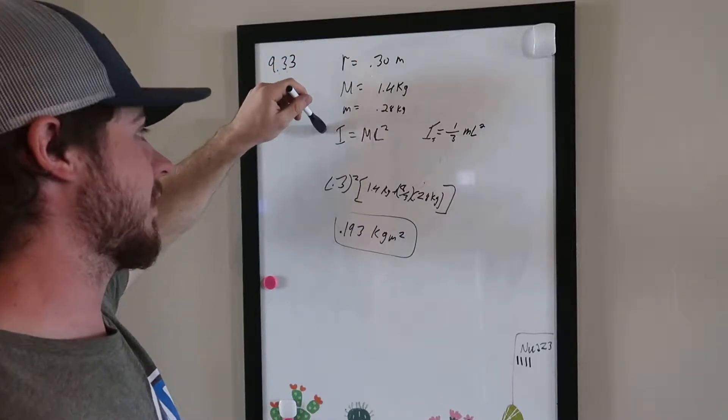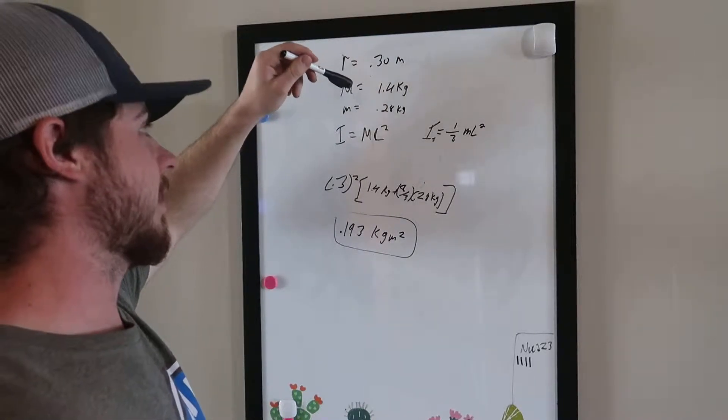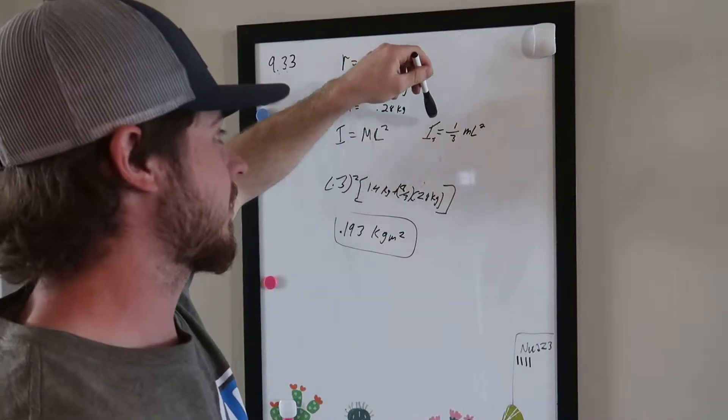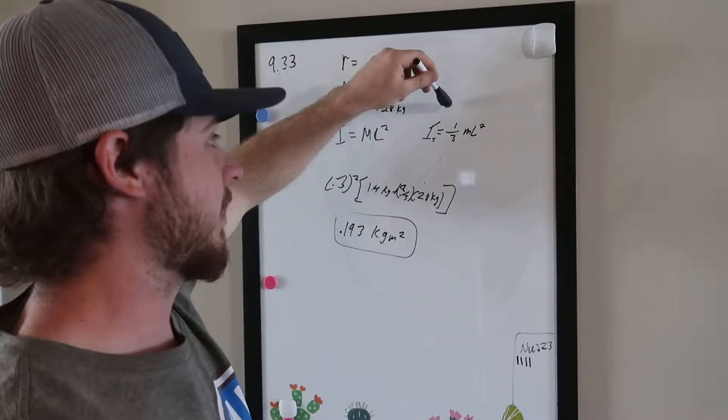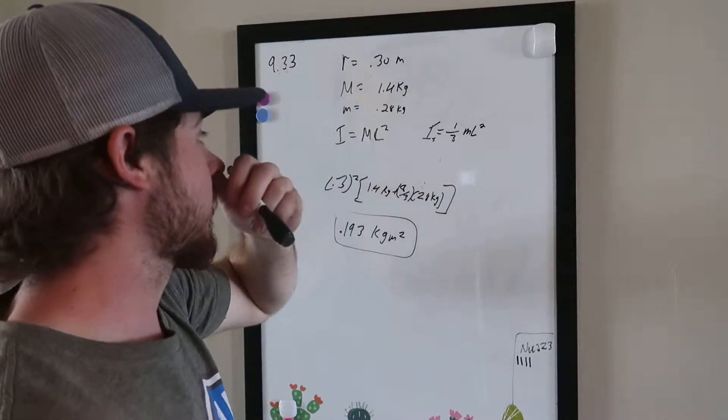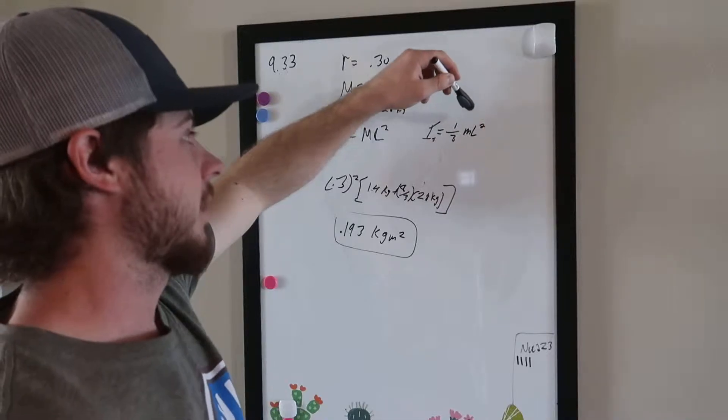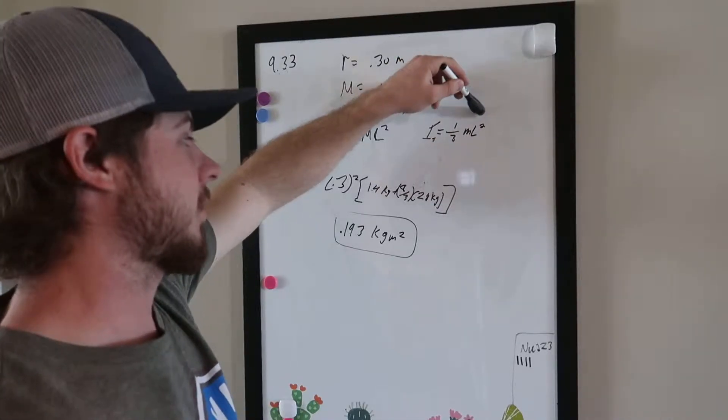The moment of inertia is equal to mass times length squared. We're going to calculate the mass of the spokes here. The equation we're going to use is one-third. So the inertia of the spokes is equal to one-third times the little m, mass of the spokes, times the length squared.